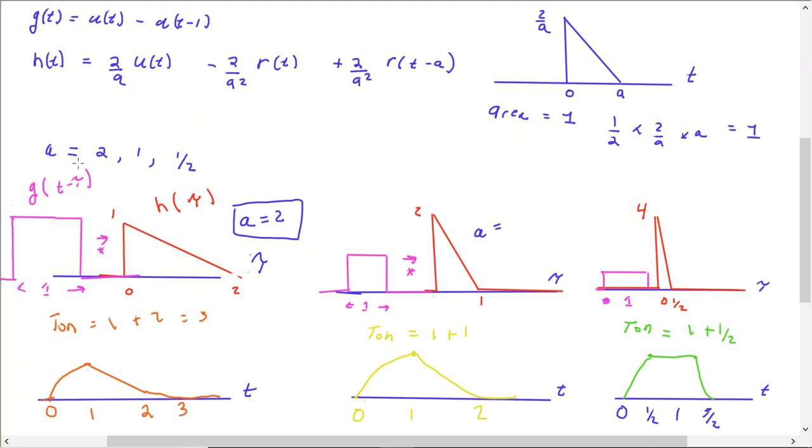Then the other one is when the delay is one. So I go from zero to one, and now I'm the same width as the rectangle, but I'm twice the height. When it overlaps, this area of one and this will be an area of one will give me a maximum of one.